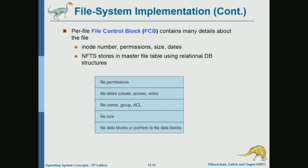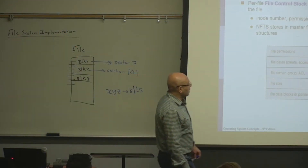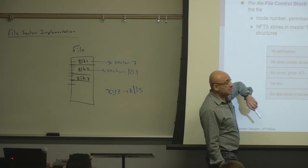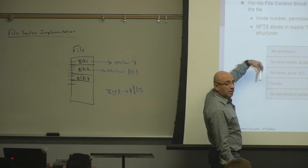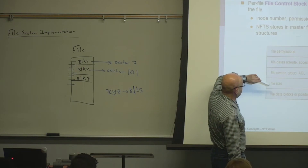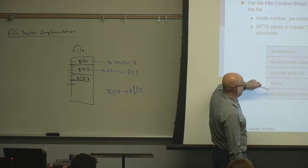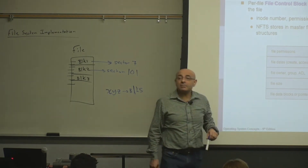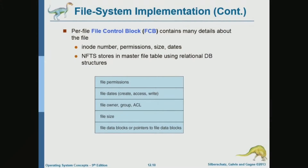The file control block contains the information the file system tracks for each file, including permissions, dates of creation and last modification, the owner, the size of the file, and pointers to the actual data blocks. The file control block doesn't have the actual data — it's just a header with metadata and pointers to the data blocks that constitute that file.